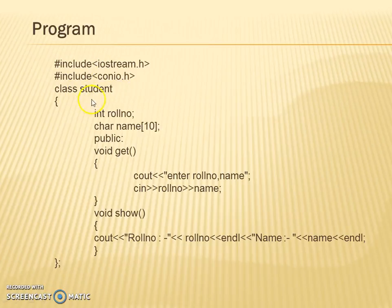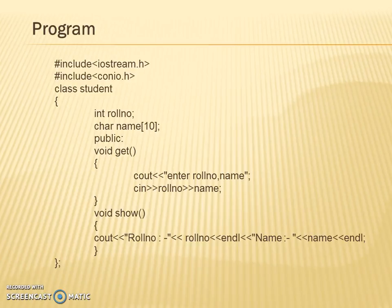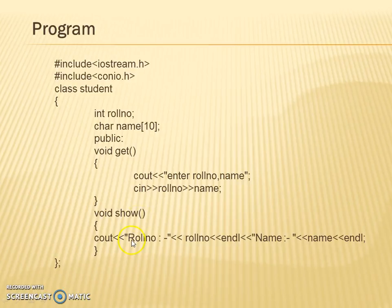In the given program, the base class A is a Student class. Its data members are roll number and name, declared as public. In the get method we receive the values — that is roll number and name. In the void show method we display the roll number and the name.